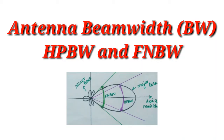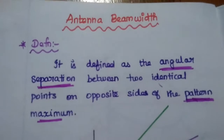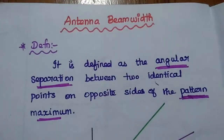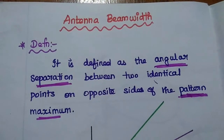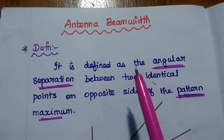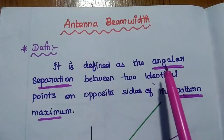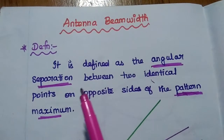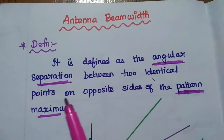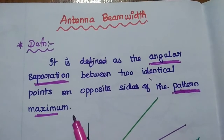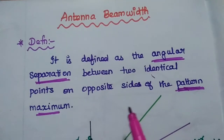Dear students, now we are going to discuss about antenna beam width and its types. Antenna beam width is defined as the angular separation between two identical points on opposite sides of the pattern maxima. This represents the angular separation — an angle between two identical points on opposite sides of the pattern maxima, where pattern maxima represents the major lobe of the radiation pattern.